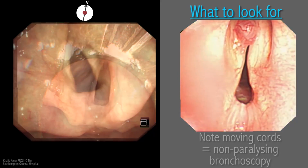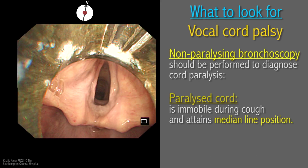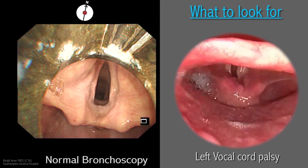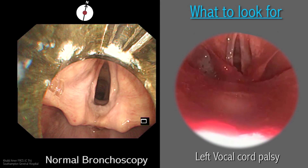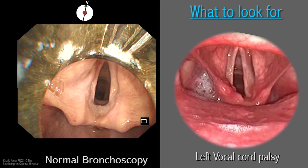To pass a comment on whether a vocal cord is paralysed or not, a non-paralyzing bronchoscopy should be performed. In other words, a muscle relaxant should not be given at the induction of general anaesthesia. Introduction of the scope will tickle the upper airway and excite a cough reflex when a paralysed cord is noted to be immobile in the adducted midline position.